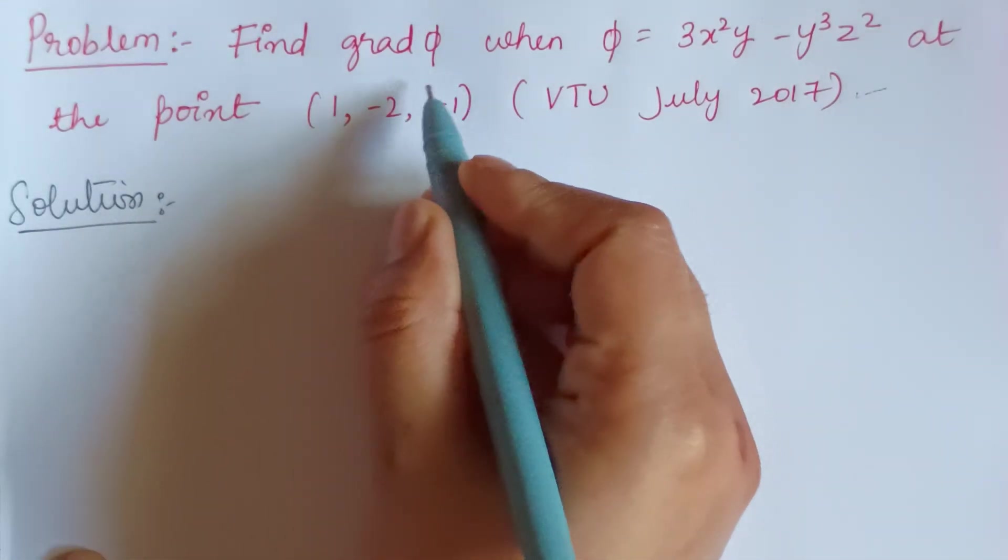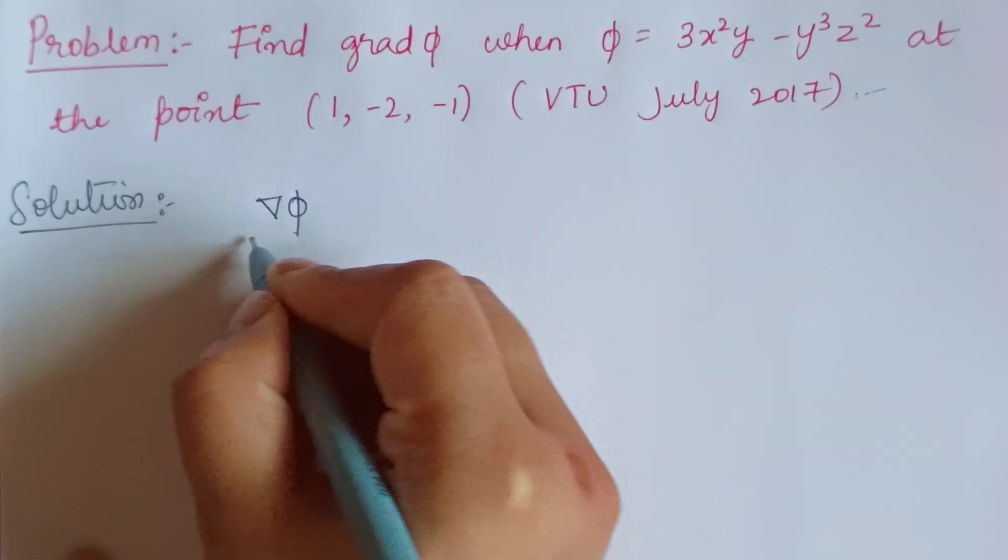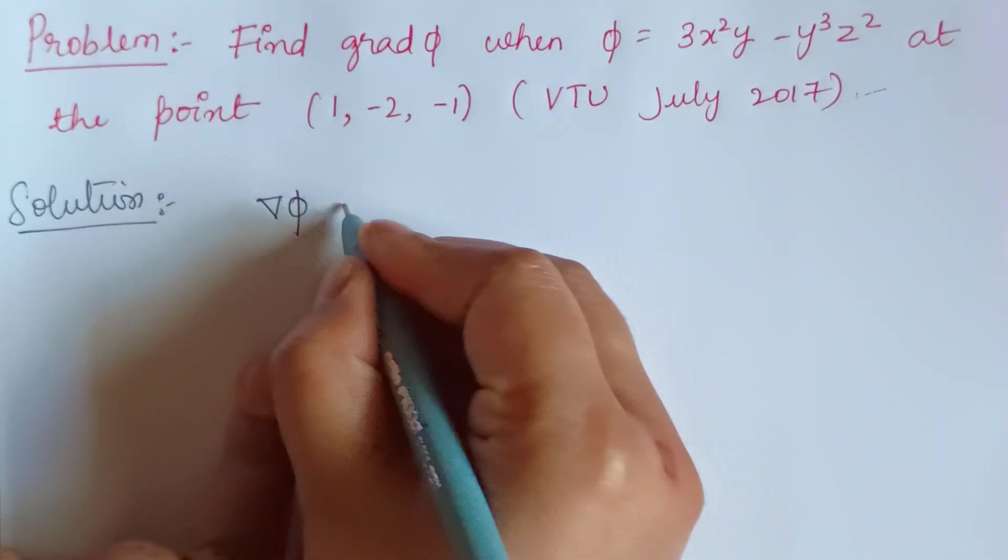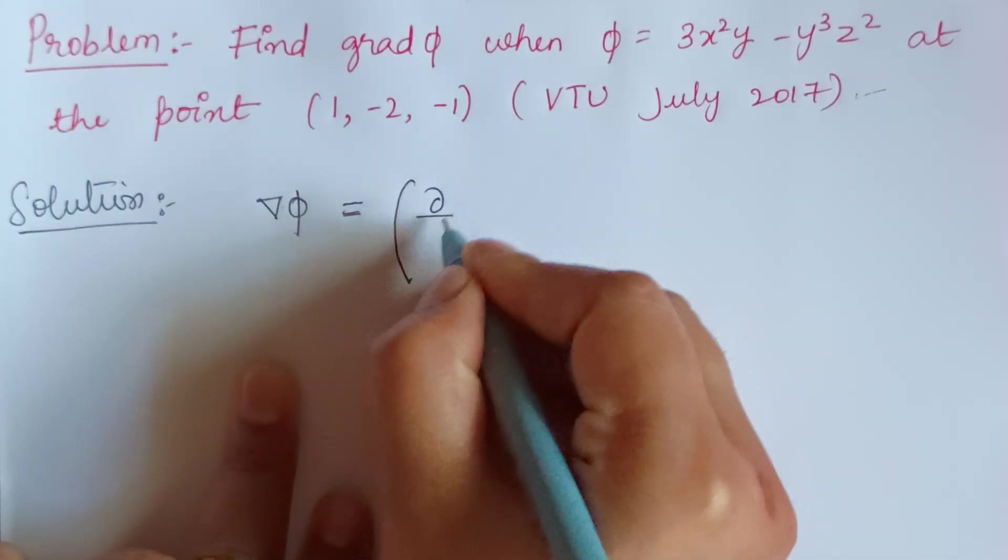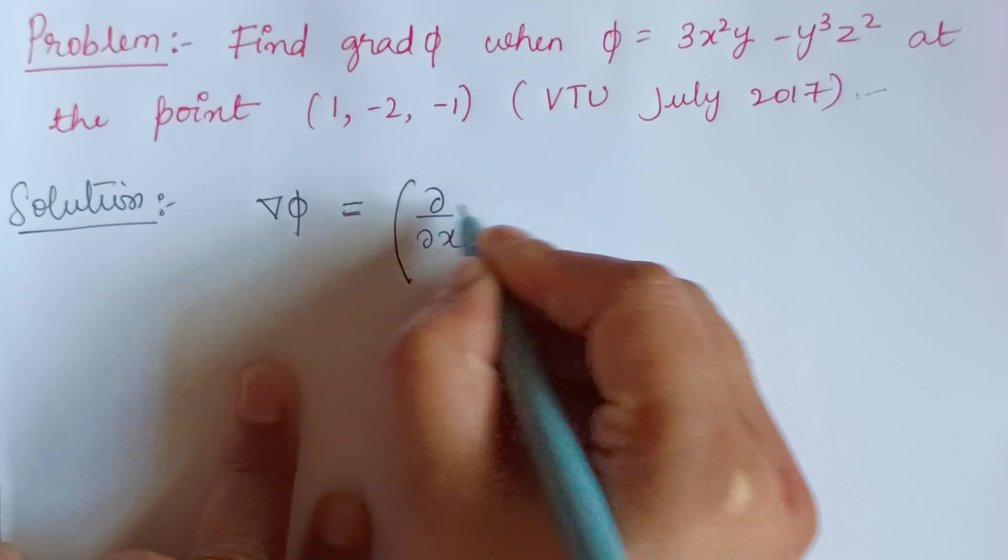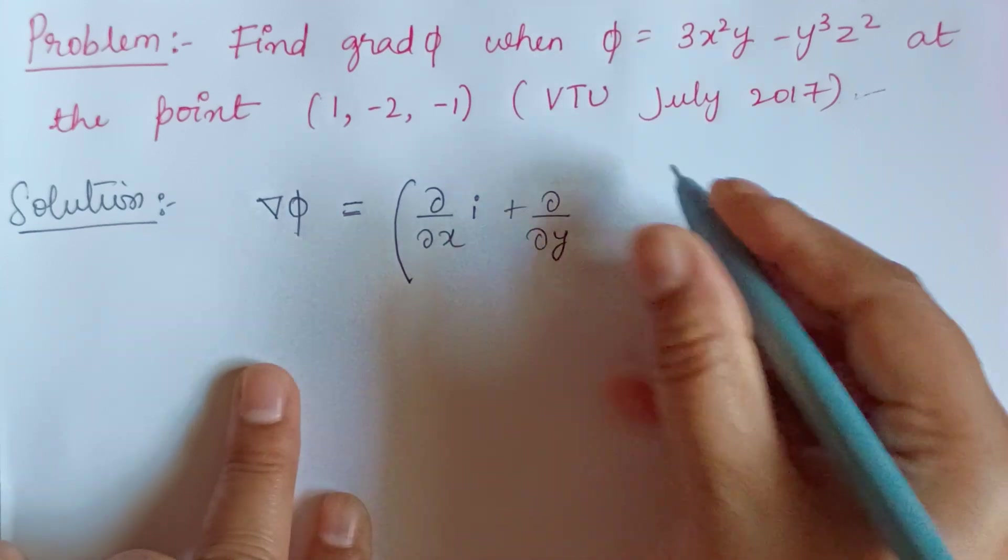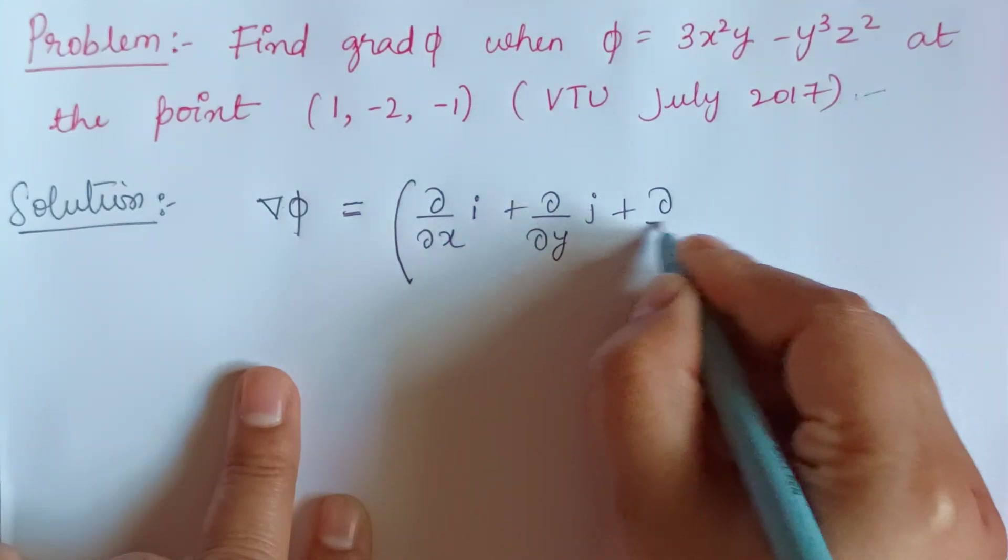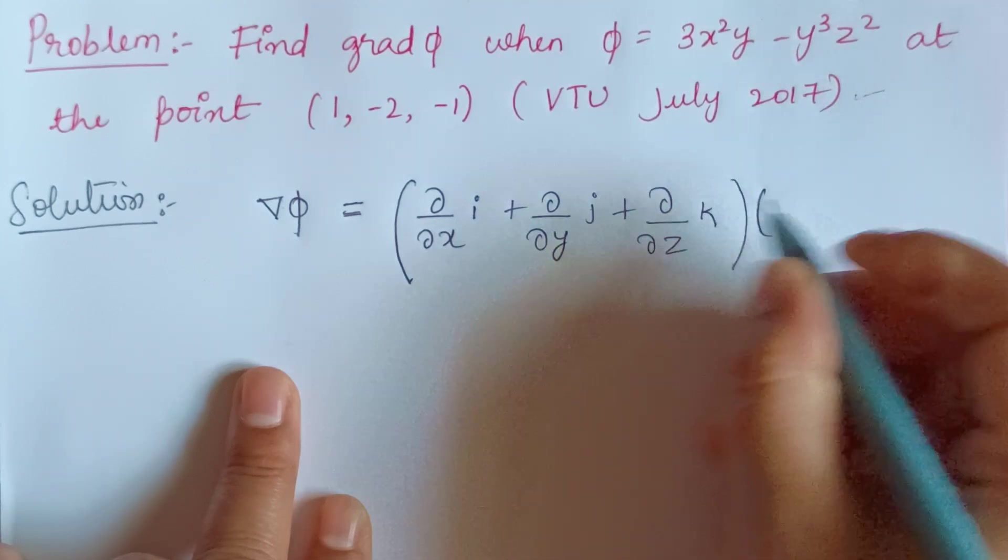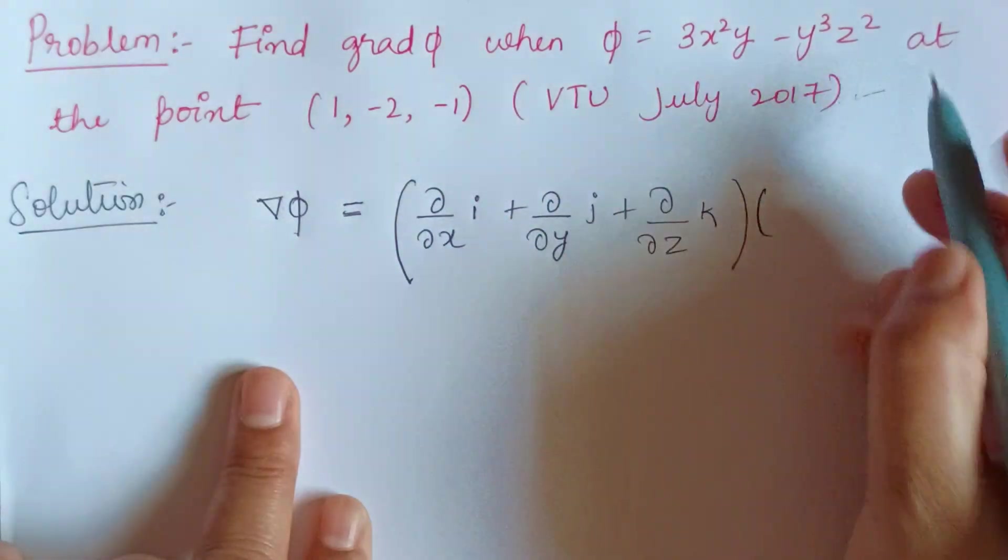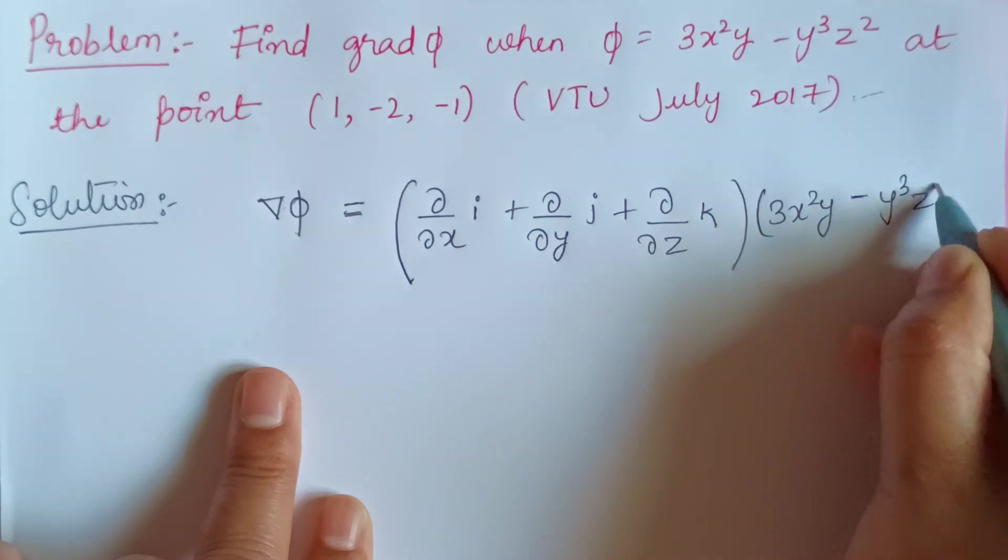So now we know that to find the grad phi, also written as del phi or nabla phi, the formula is partial differentiation with respect to x times i plus partial differentiation with respect to y times j plus partial differentiation with respect to z times k into phi, which is 3x²y minus y³z².